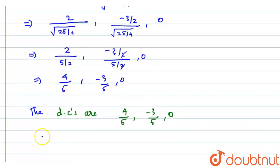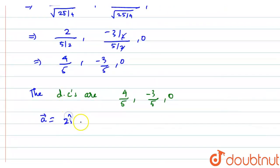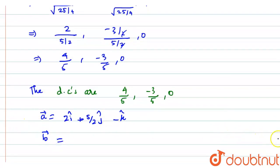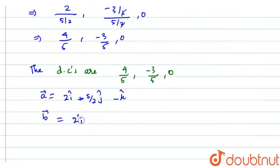Now we're going to find the vector equation of the line. Let us identify the points of the line as vector a and vector b. Vector a is found using the point from the line equation — that is, x minus x1, y minus y1, z minus z1 — so vector a will be 2i cap plus 5 by 2 j cap minus k cap. For vector b, using the direction ratios 2, minus 3 by 2, and 0, we have 2i cap minus 3 by 2 j cap.